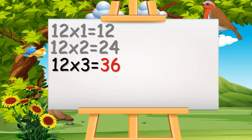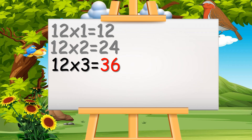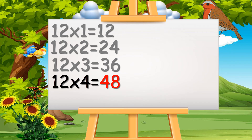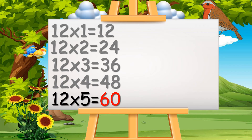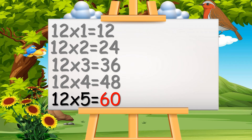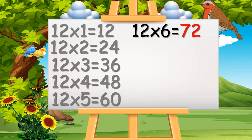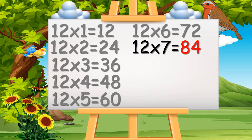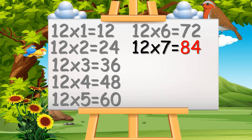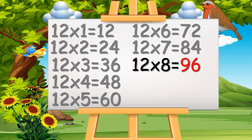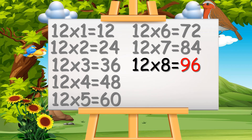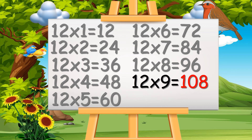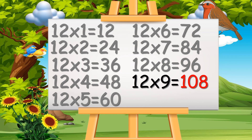12 threes are 36. 12 fours are 48. 12 fives are 60. 12 sixes are 72. 12 sevens are 84. 12 eights are 96. 12 nines are 108.